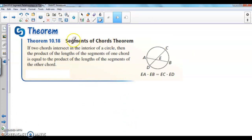The first theorem we're going to look at is called the segment of chords theorem. If two chords intersect in the interior of a circle, in this case, AB and CD are both chords and they intersect in the interior at point E. Then, the product of the length of the segments of one chord is equal to the product of the length of the segments of the other chord.